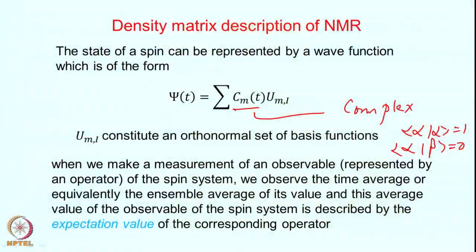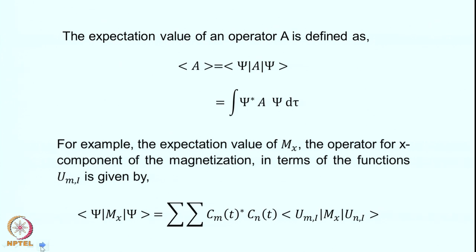When you make a measurement on an ensemble consisting of trillions of spins, what you measure is an ensemble average, or equivalently the time average of a particular spin over a long period of time. This is described by the expectation value of the operator. Every physical observable is described by an operator, and making a measurement gives the expectation value of that operator, representing the ensemble average.